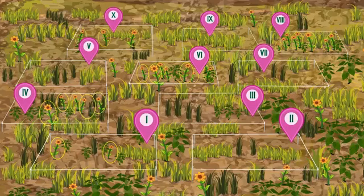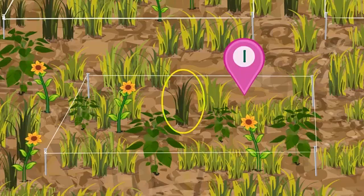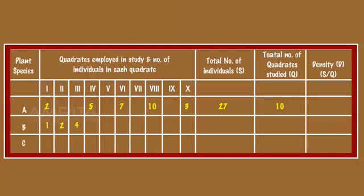Similarly, count the number of individuals of species A in other quadrats respectively and record the data in the table. Count the number of individuals of species B present in the first quadrat. Similarly, count the number of individuals of species B in other quadrats and record the data in the table.